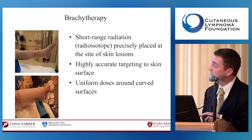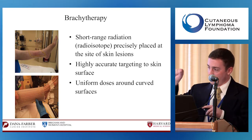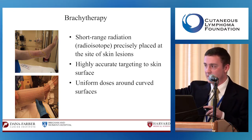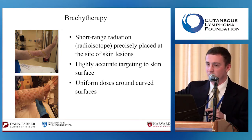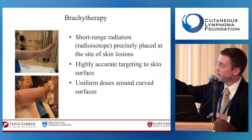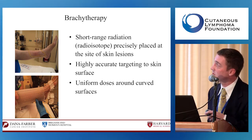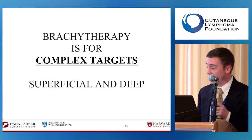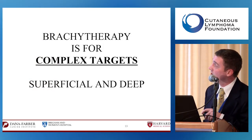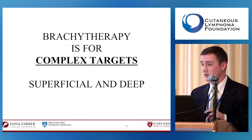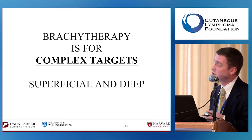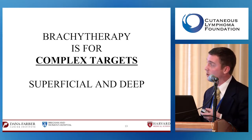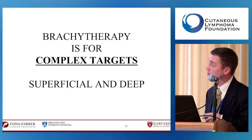The ideal with brachytherapy is getting uniform doses around curved surfaces. If you want to treat a point on skin that curves, you lose a fraction of the dose. So it's important to have a therapy that can treat curved surfaces. The key takeaway is that brachytherapy is for complex targets—superficial and deep—whereas electrons are wonderful for flat surfaces like backs or chest, depending on the area being treated.